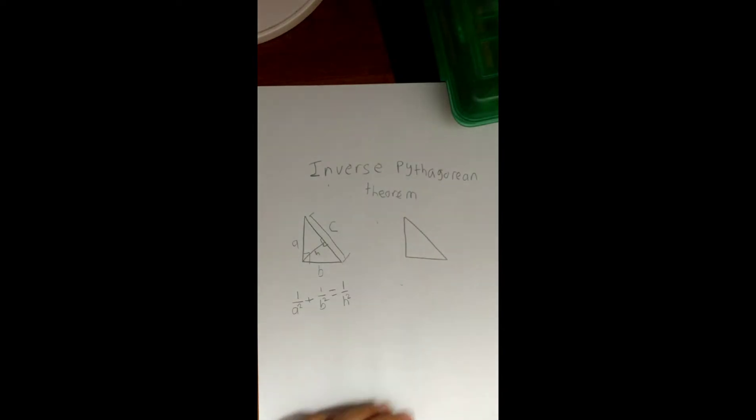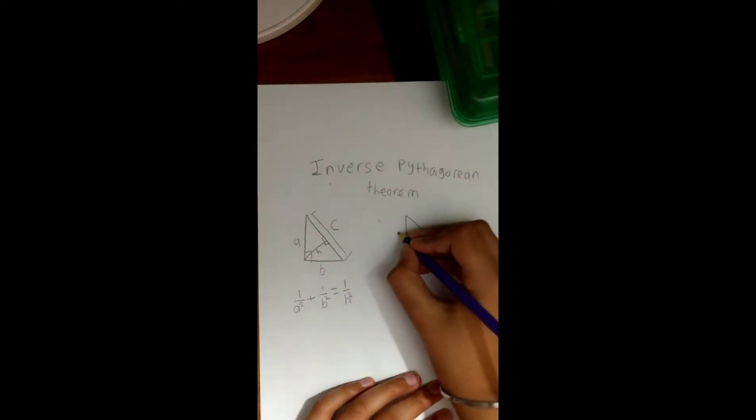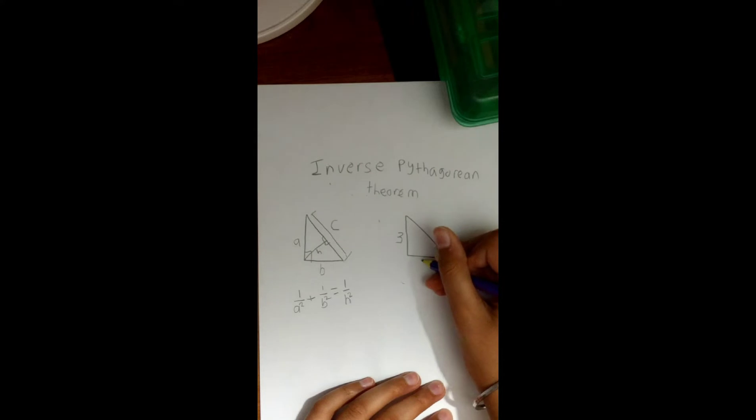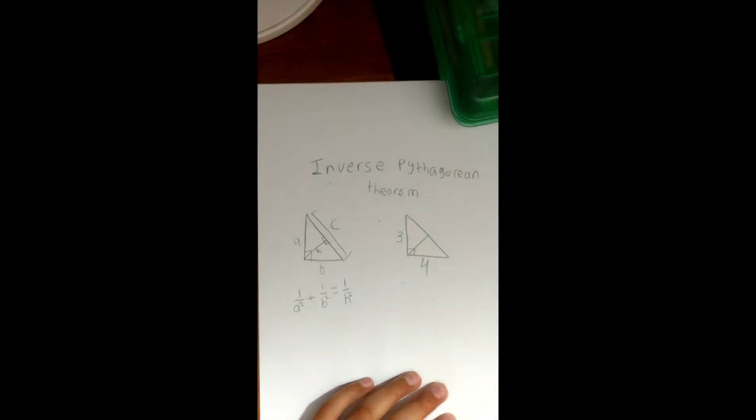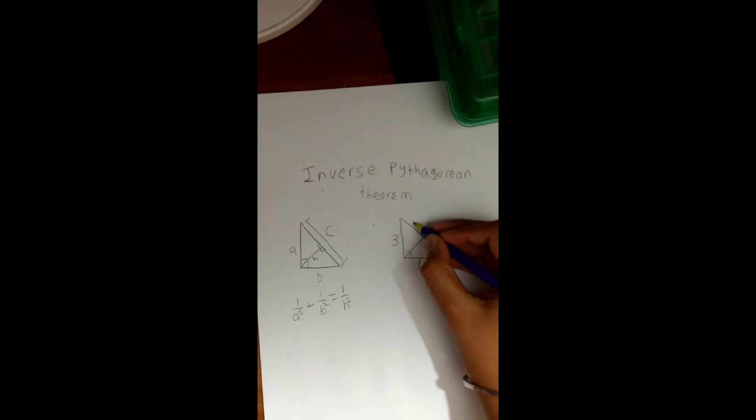All right, so for the proof, let me construct another right triangle. And let's call this leg 3 and this leg 4, and this is a right triangle. And then let's call this side length d, let's call this e, and let's call this whole side length c.